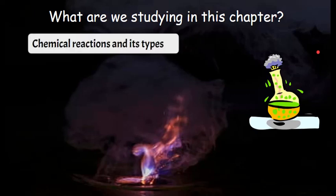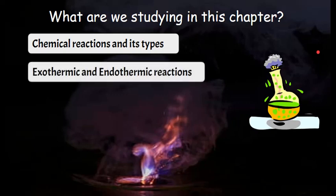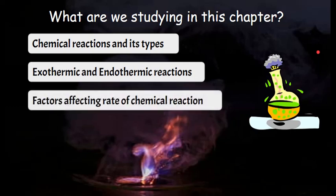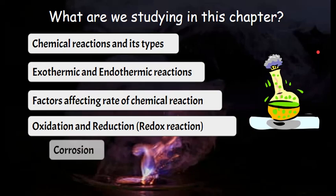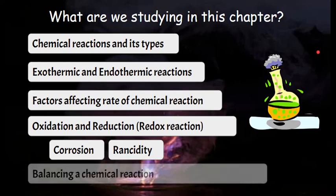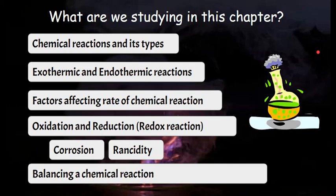First of all, we are going to learn what are chemical reactions and what are the types of chemical reactions. After that, we will study about exothermic and endothermic reactions. We will get to know what are the factors affecting rate of any chemical reaction. After that, oxidation and reduction, which are called redox reactions. We will study two topics like corrosion and rancidity. And in the end, what we are going to learn is how to balance a chemical equation. This chapter is going to be very interesting.